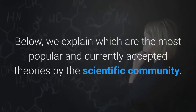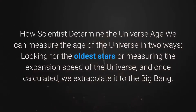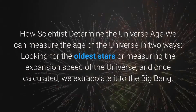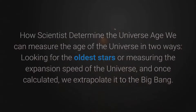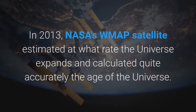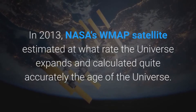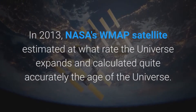How scientists determine the universe's age: we can measure the age of the universe in two ways — looking for the oldest stars, or measuring the expansion speed of the universe and once calculated, we extrapolate it to the Big Bang. In 2013, NASA's WMAP satellite estimated at what rate the universe expands and calculated quite accurately the age of the universe.